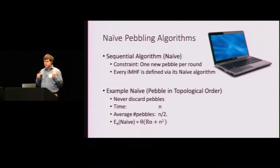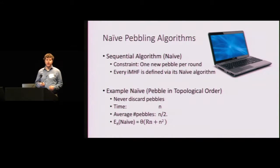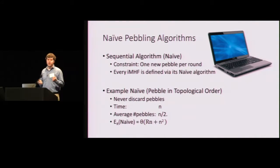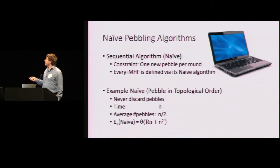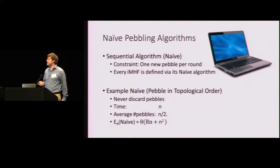All right. So now that I've told you how to evaluate the security of an IMHF, let's think about pebbling algorithms. And first of all, I want to think about the pebbling algorithm which would be used by the honest party. We'll call this the naive pebbling algorithm. And because the naive pebbling algorithm is run by an honest party, typically we expect this algorithm to be something that you could run on a sequential computer. So the constraint is only one new pebble can be placed on the graph per round.